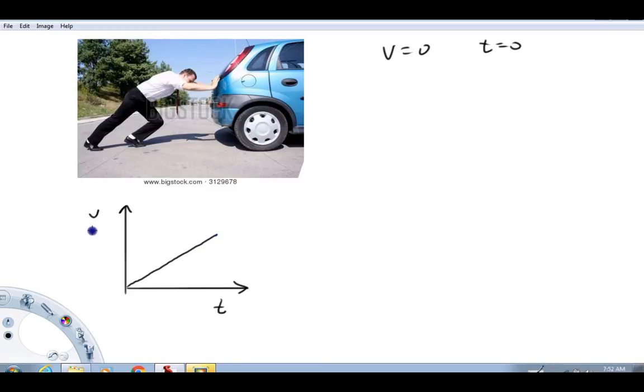Now the velocity graph remember has a couple properties that are important slope and area and the one I want to talk about here is slope. So the slope of a velocity graph remember is change in v over change in t and that's what we call acceleration. So the slope of this line would be giving the acceleration of the vehicle.